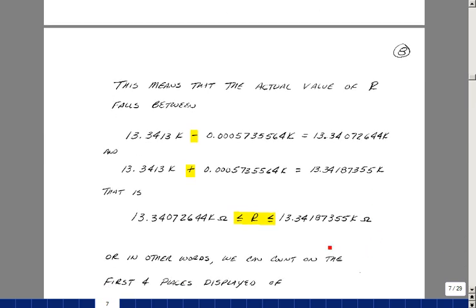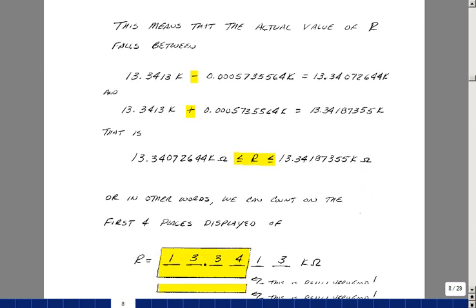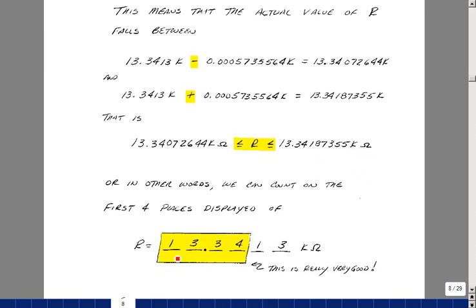So in reality what we read is somewhere between this value and this value. But if you look at the reading it was thirteen point three four one three and both of these the first four places are identical.